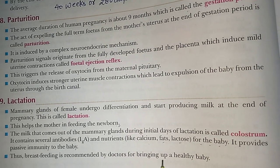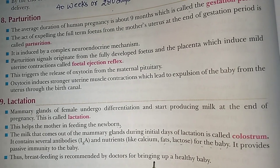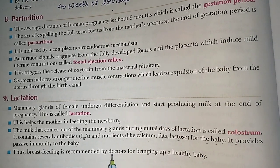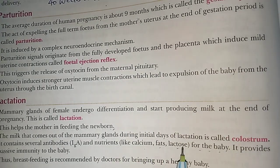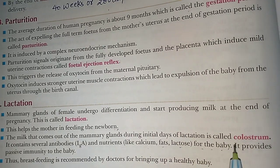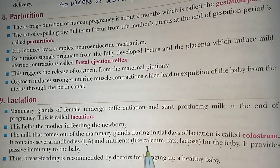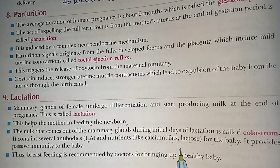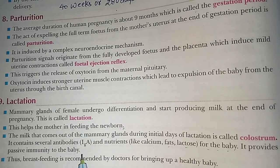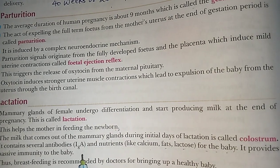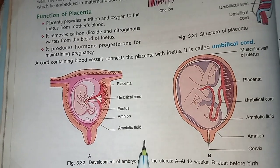Colostrum contains antibodies and several nutrients essential for getting up a healthy baby. اس لیے breast feeding کو doctors کے دوارہ بھی recommend کیا جاتا ہے۔ Breast feeding baby کو کرانا چاہیے۔ Initial سمیہ میں milk کا secretion ہوتا ہے جس میں colostrum پایا جاتا ہے۔ Colostrum میں antibodies اور several nutrients ہوتے ہیں جو baby کی health کے لیے بہت اچھے ہوتے ہیں اور immunity provide کرتے ہیں۔